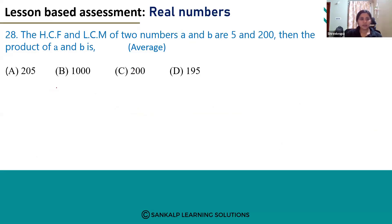So they have given the LCM of A and B, that is 200, and HCF of A and B is 5. They are asking us to find out the product of A and B.